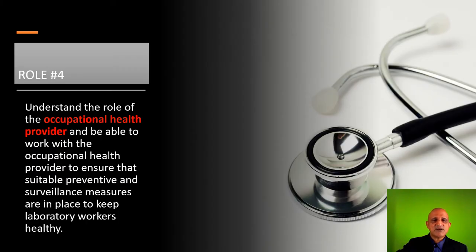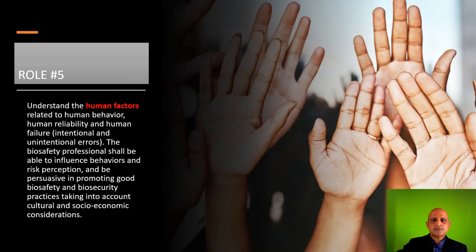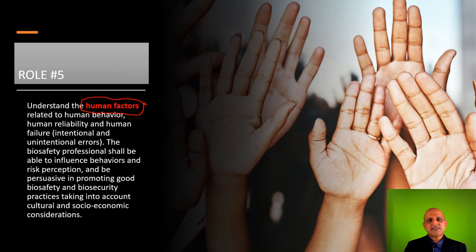The fourth role is to understand the role of the occupational health and safety provider. You should work alongside doctors and medical personnel associated with health and safety at your respective organisation. The fifth role is that the biosafety officer must also be aware of what are termed as human factors. Each human being has unique characteristics, and these must be addressed by a biosafety officer. This requires a certain amount of intuition and may also require inputs from professionals in behaviour management.